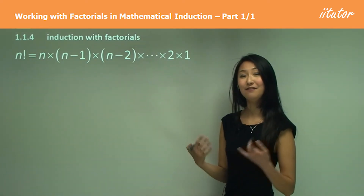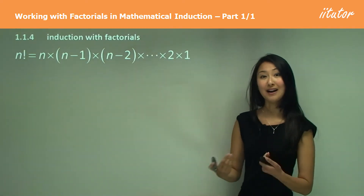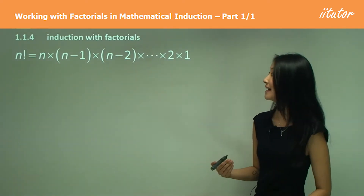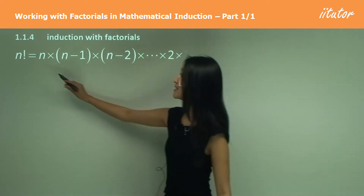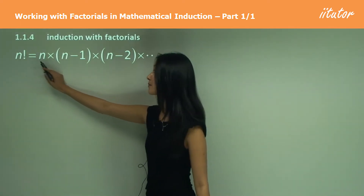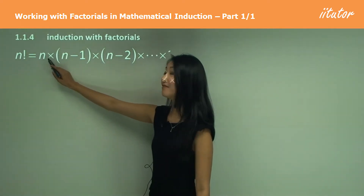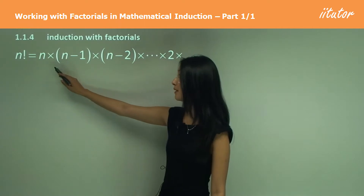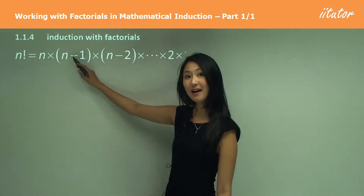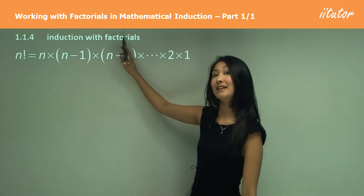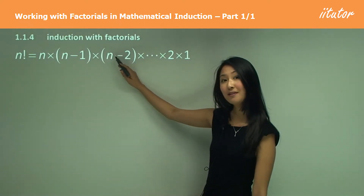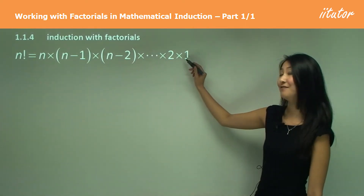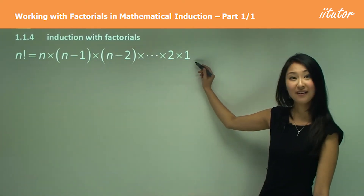Now what does N factorial actually mean? Well, starting from the number N, we have that number multiplied by one number smaller than that, and then another number smaller than that, and so on until we have times one.